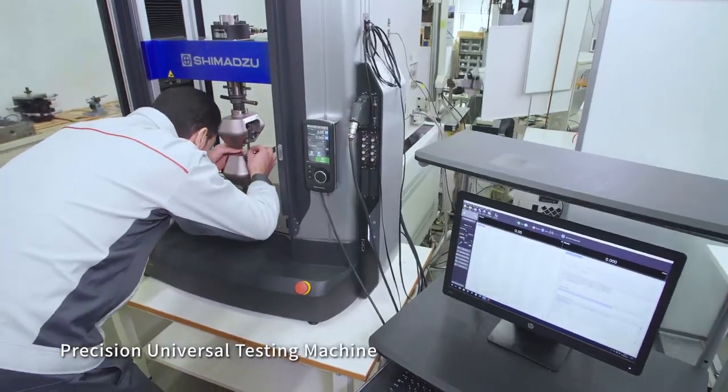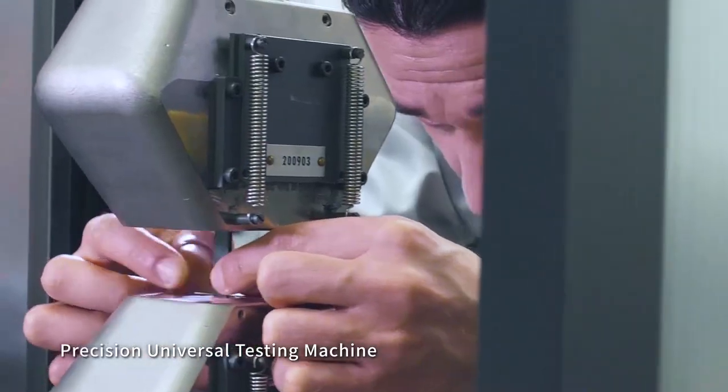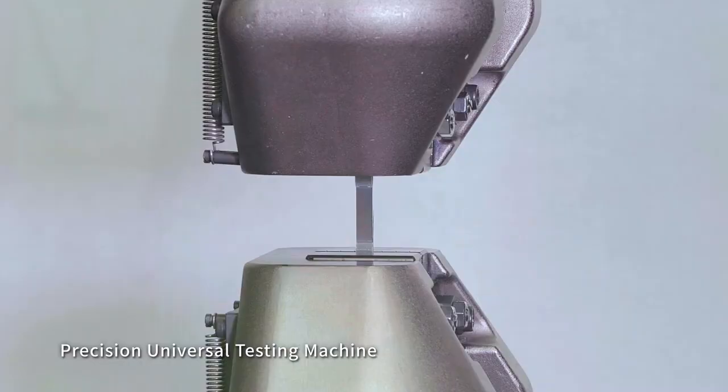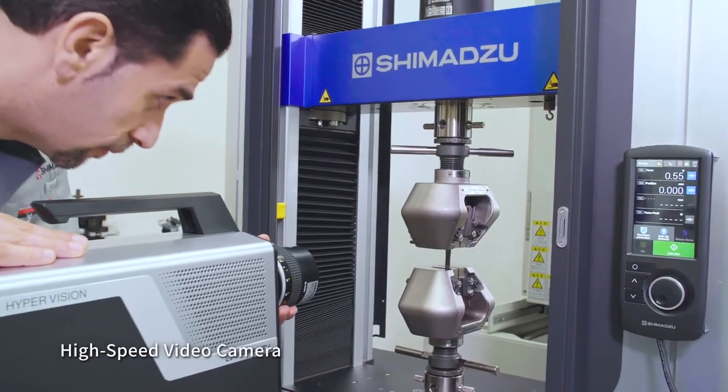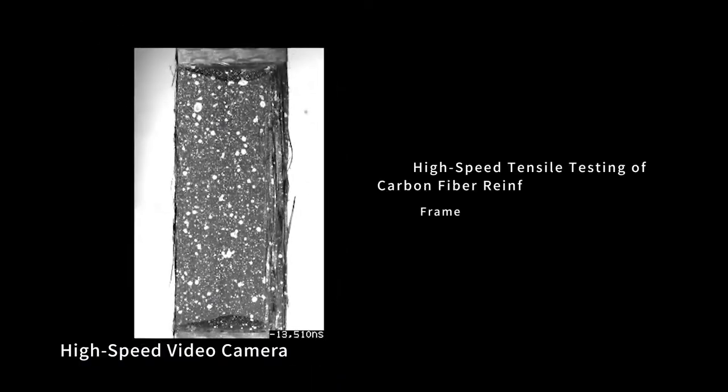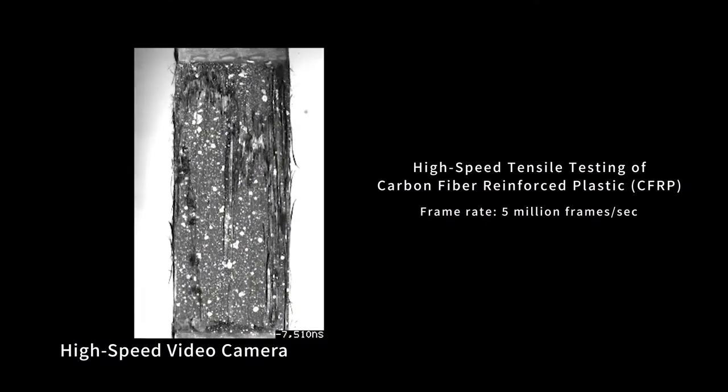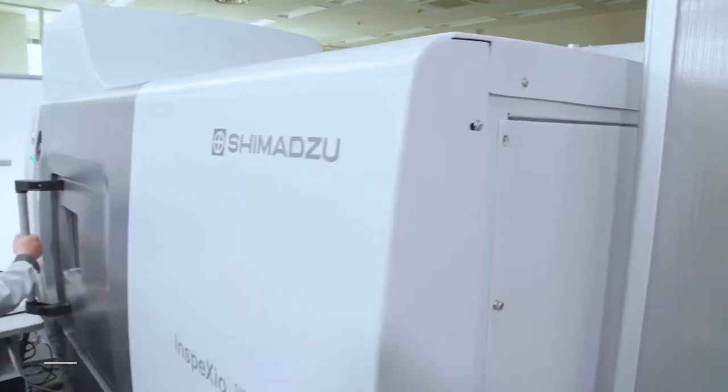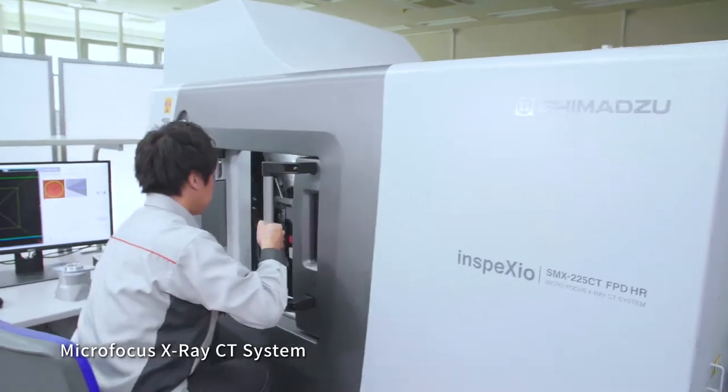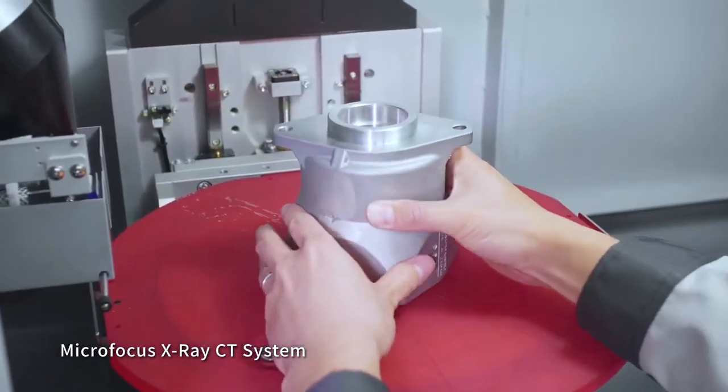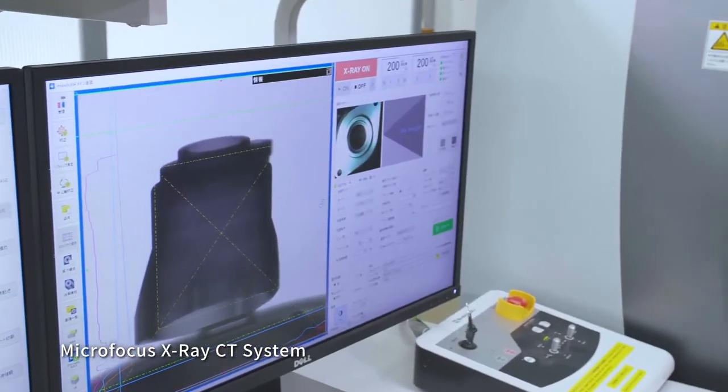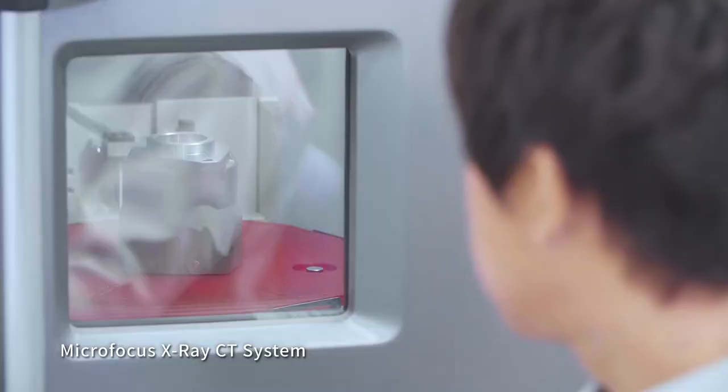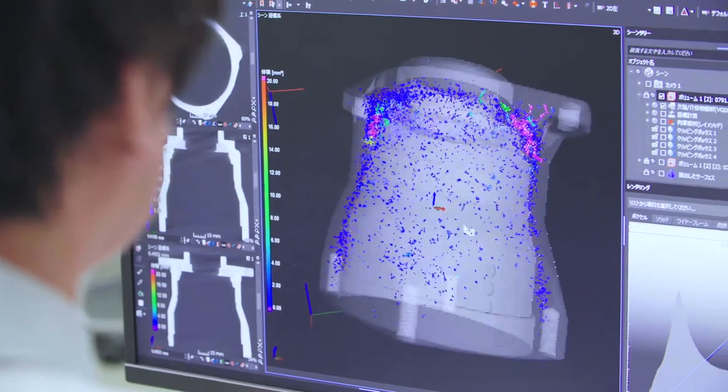This is a precision universal testing machine that measures the strength of various materials, such as metals and plastics. With high precision measurement technologies, including high-speed video cameras that can visualize phenomena such as material failures that cannot be captured by the human eye, as well as non-destructive inspection using x-rays, we support all kinds of manufacturing by measuring safety and durability.